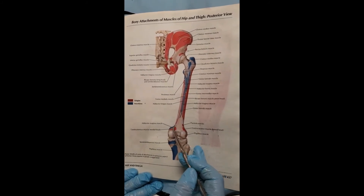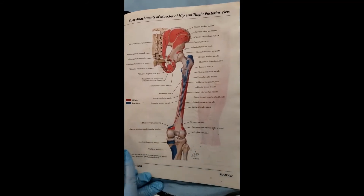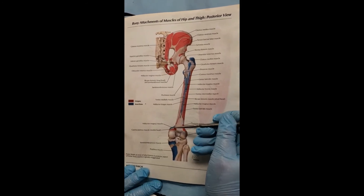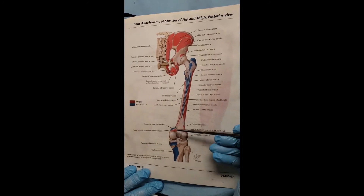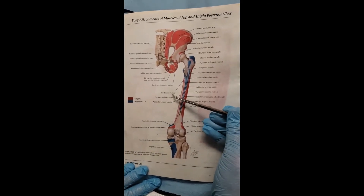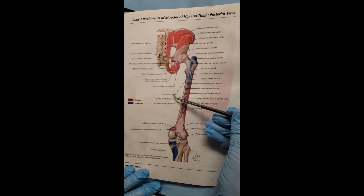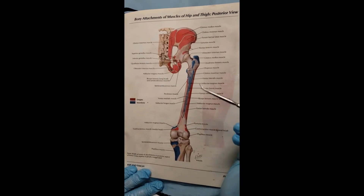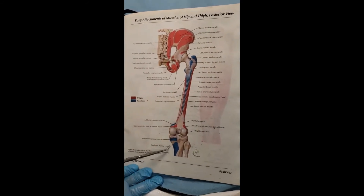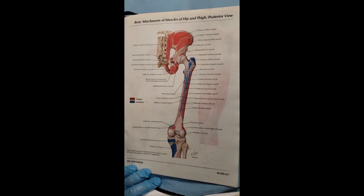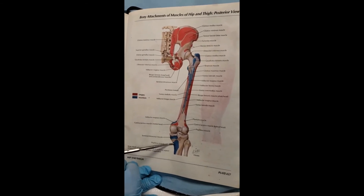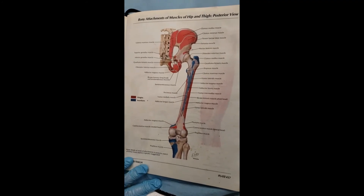Most of these muscles are innervated by the obturator nerve. The exception is the hamstring part of the adductor magnus, which is innervated by the tibial branch of the sciatic nerve, not by the obturator. The pectineus is another exception — it can have dual innervation from the femoral nerve and possibly also the obturator nerve. Finally, the gracilis is the only medial compartment muscle that crosses the knee, attaching on the anteromedial aspect of the proximal tibia along with the sartorius and semitendinosus — the three muscles forming the pes anserinus.